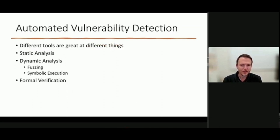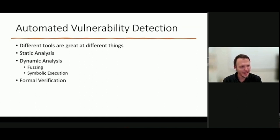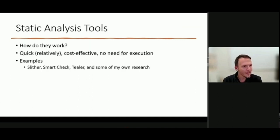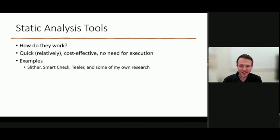Automated vulnerability detection plays a vital role in ensuring the security and reliability of smart contracts. Given the irreversible nature of transactions and the high-value assets involved, detecting and rectifying vulnerabilities before deployment is really important. There are three main types: static analysis, dynamic analysis — which includes fuzzing and symbolic execution — and formal verification. Static analysis tools inspect the source code without executing the contract, either on source code or bytecode, and can identify potential vulnerabilities and coding mistakes quickly. It's a cost-effective first line of defense. Tools like Slither, SmartCheck, Teela, and some I've been developing based off the Teela framework are examples of this, though they can miss certain kinds of vulnerabilities.